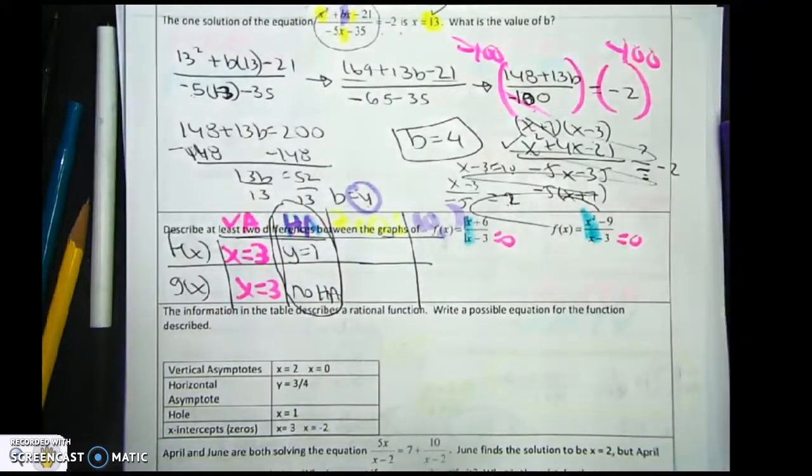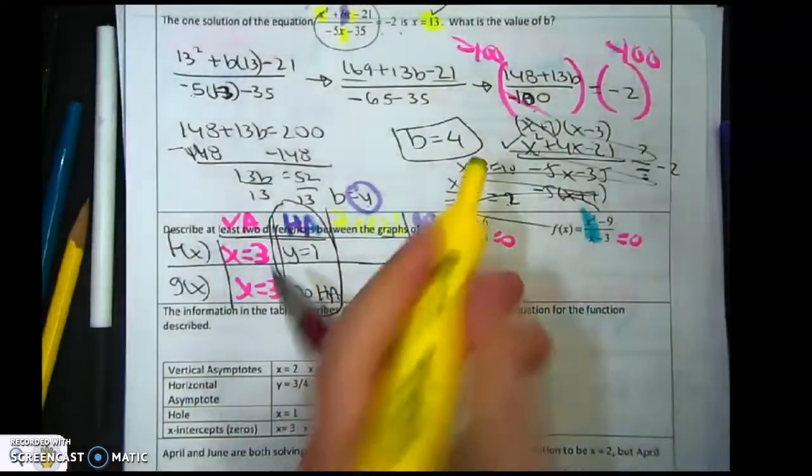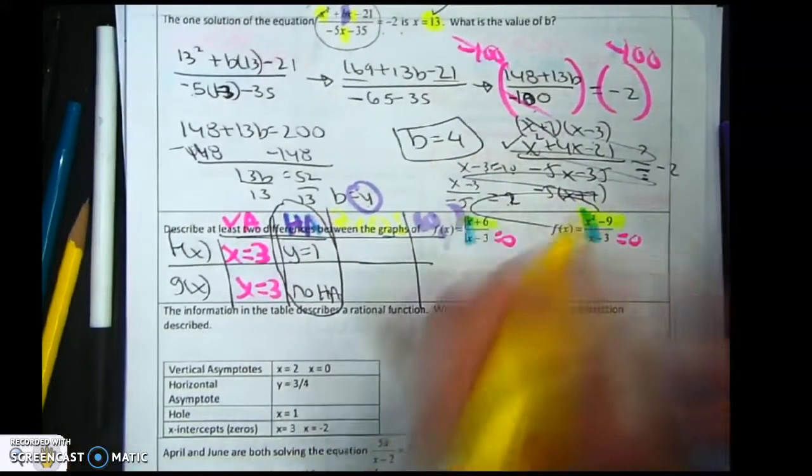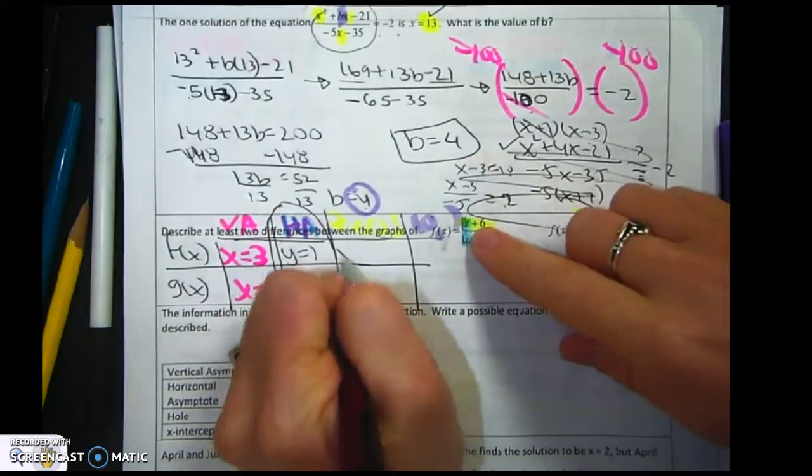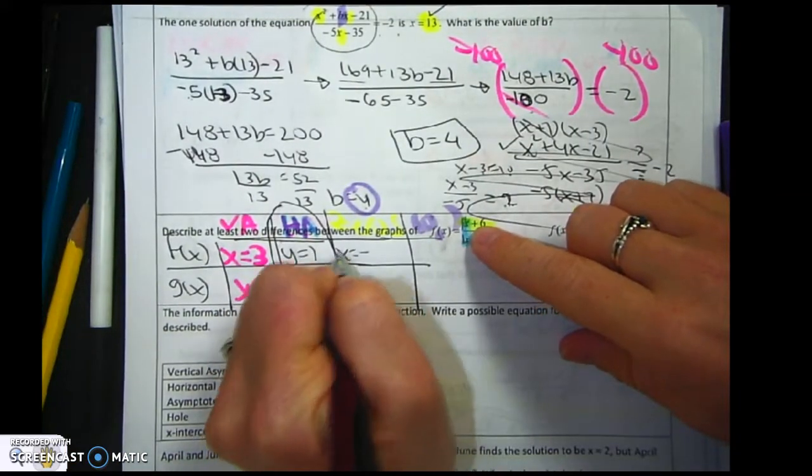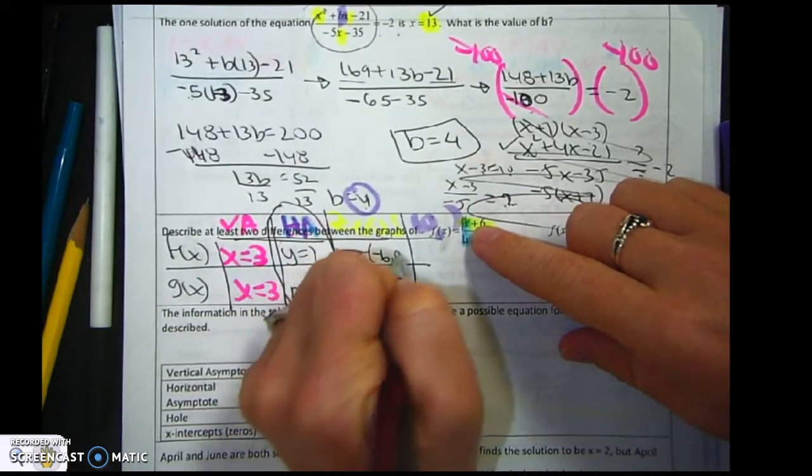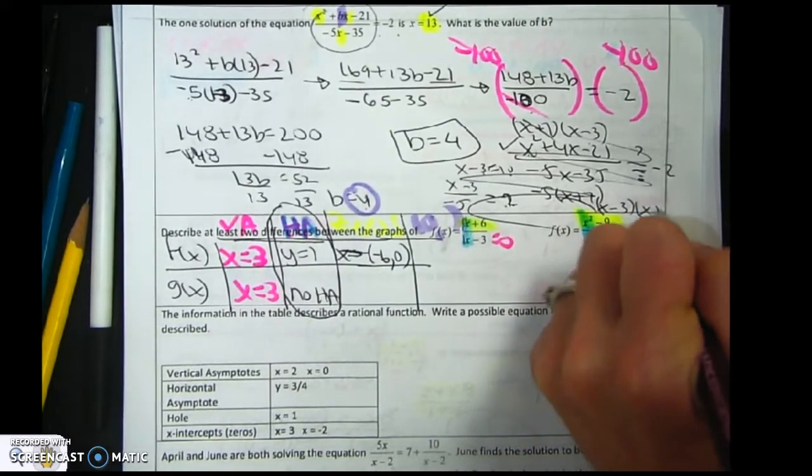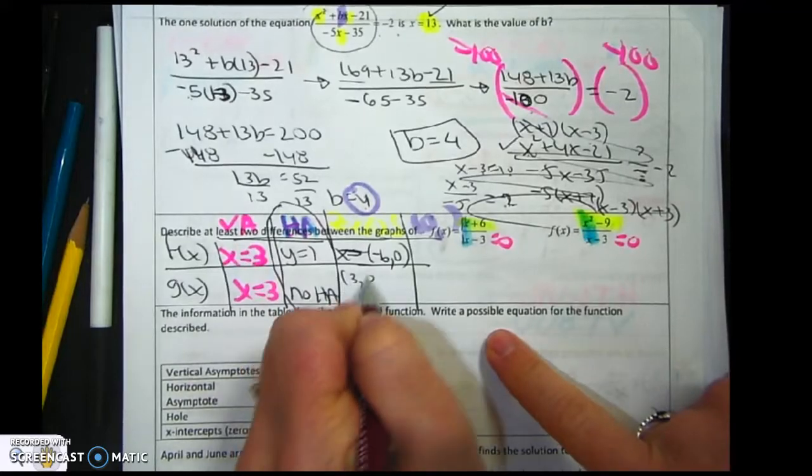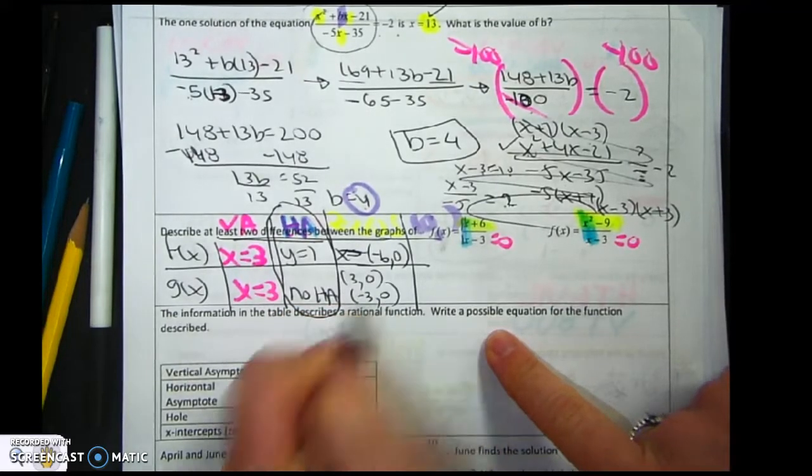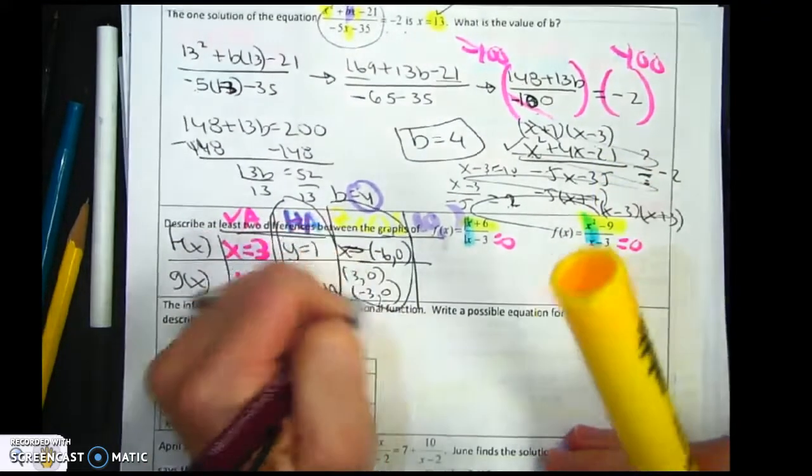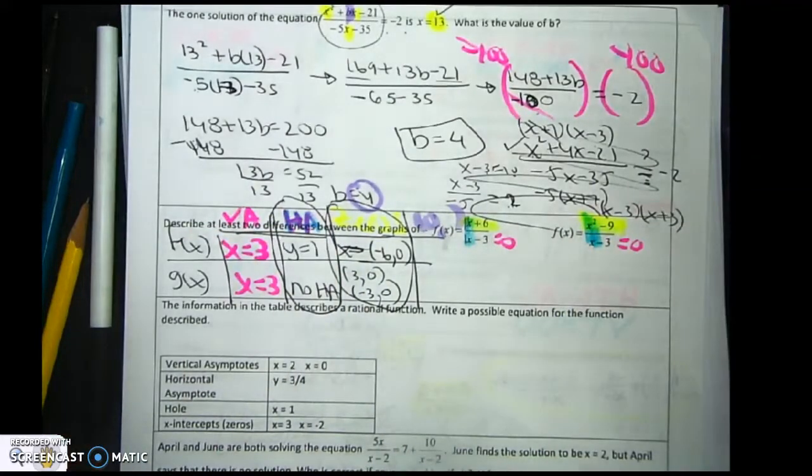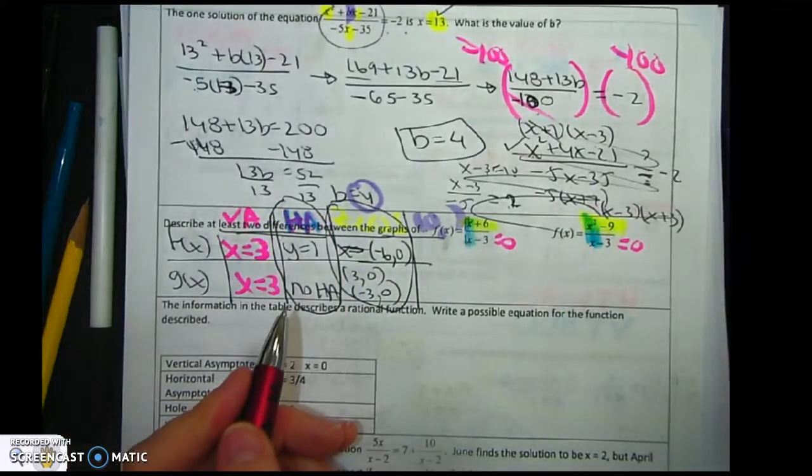My zeros are based on my numerator. In the top, my zero is negative 6 comma 0. But in the denominator, when I factor x minus 3, x plus 3, I get 3, 0, and negative 3, 0. So you give me these two things, and I'm a happy girl. But if you want to give me more, then we can do that.